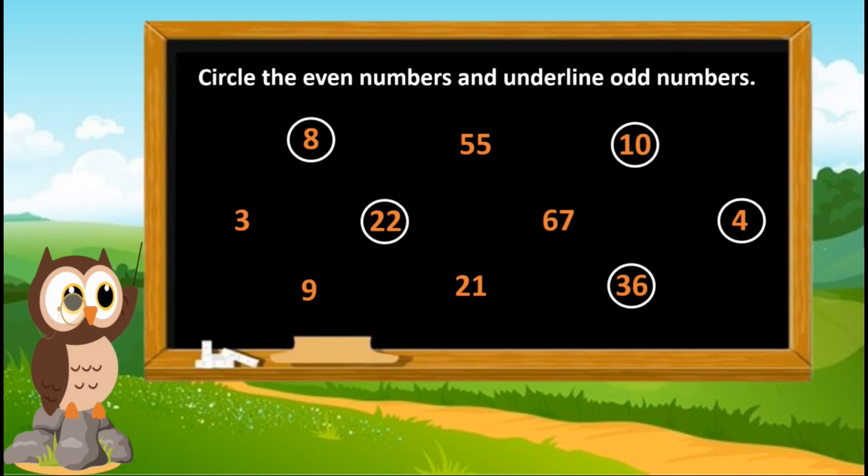Remaining numbers are ending with one, three, five, seven, or nine, so fifty-five, three, sixty-seven, nine, and twenty-one are odd numbers.